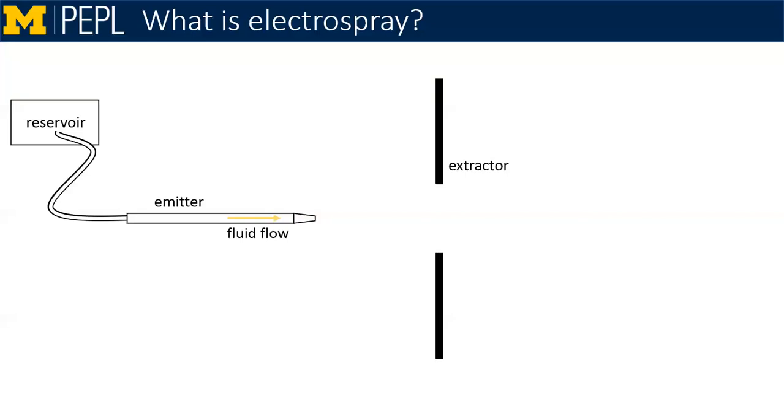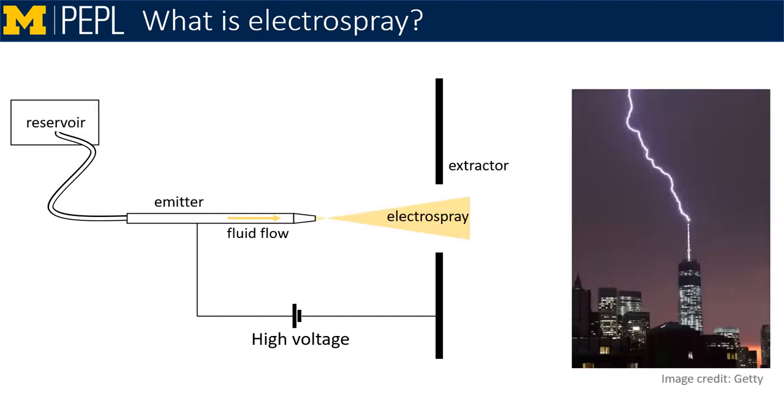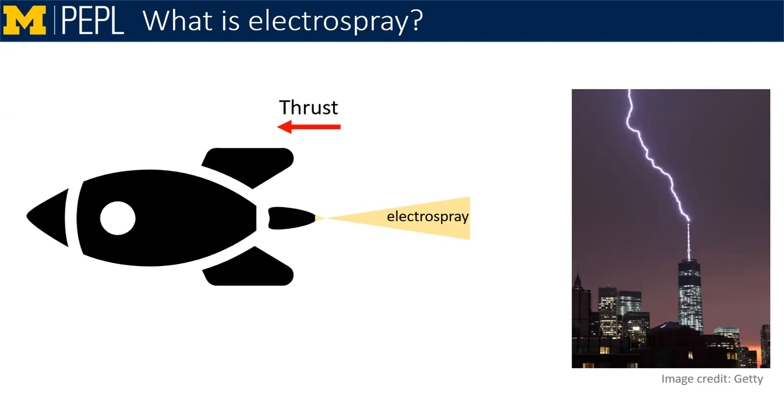What is an electrospray, and how do we turn one into a rocket? Well, electrosprays use a conductive liquid as a propellant. When you feed that liquid to the tip of a needle and bias that needle to high voltage, it sprays a beam of electrically charged particles, electrospray. It's like a liquid lightning rod. Expelling this beam then creates a force in the opposite direction, creating our rocket.